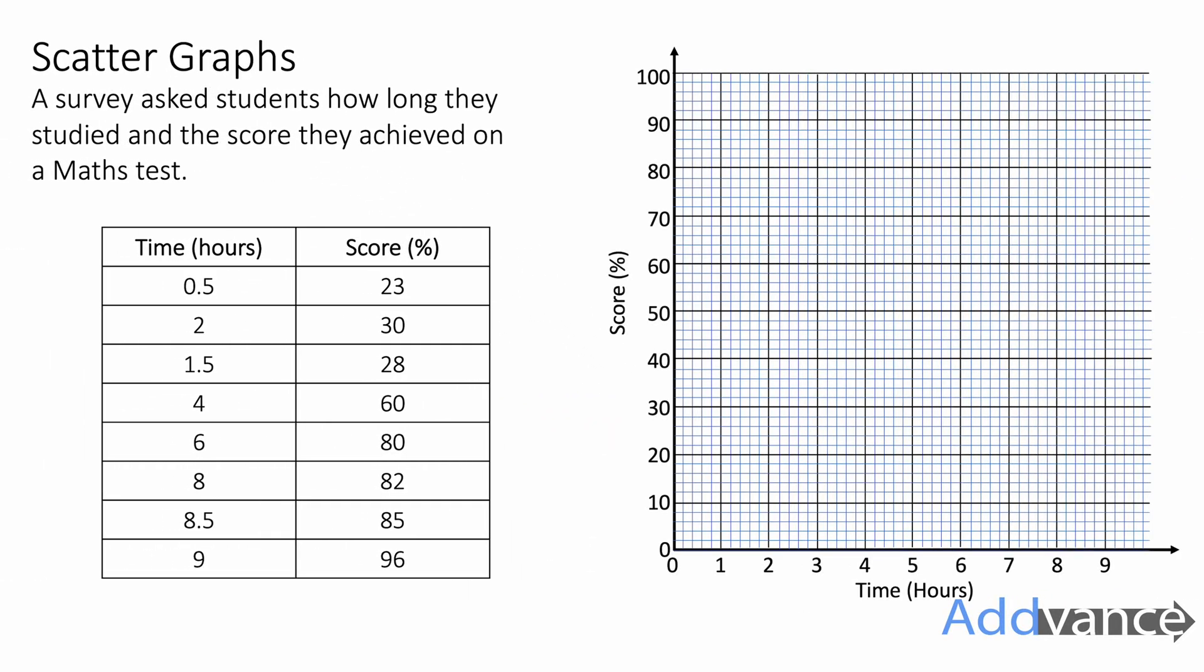A scatter graph is a way of displaying data. Here we have survey results where a survey asked students how long they studied for a maths test and the score they achieved on this maths test, where the time is measured in hours and the score is measured in percent.